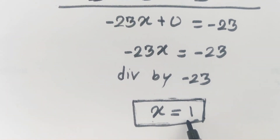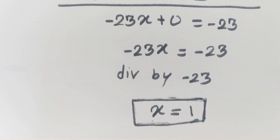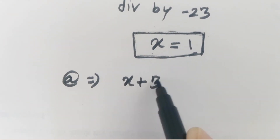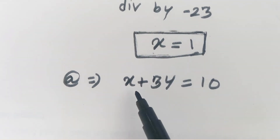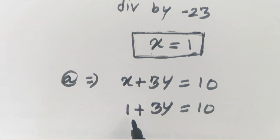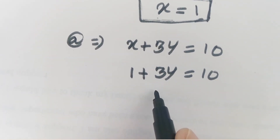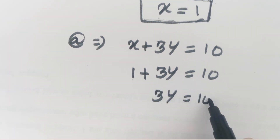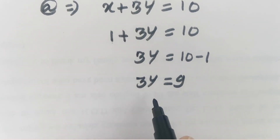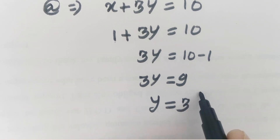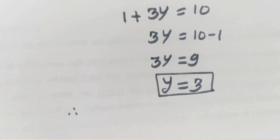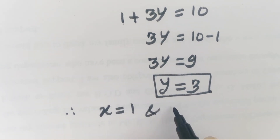Now substitute x equals 1 into equation a to find y. Equation a is x plus 3y equals 10. Putting x equals 1, we get 1 plus 3y equals 10. Shifting 1 to the right-hand side gives 3y equals 10 minus 1, so 3y equals 9. Dividing by 3, we get y equals 3. Therefore, the solution of our given system of linear equations is x equals 1 and y equals 3.